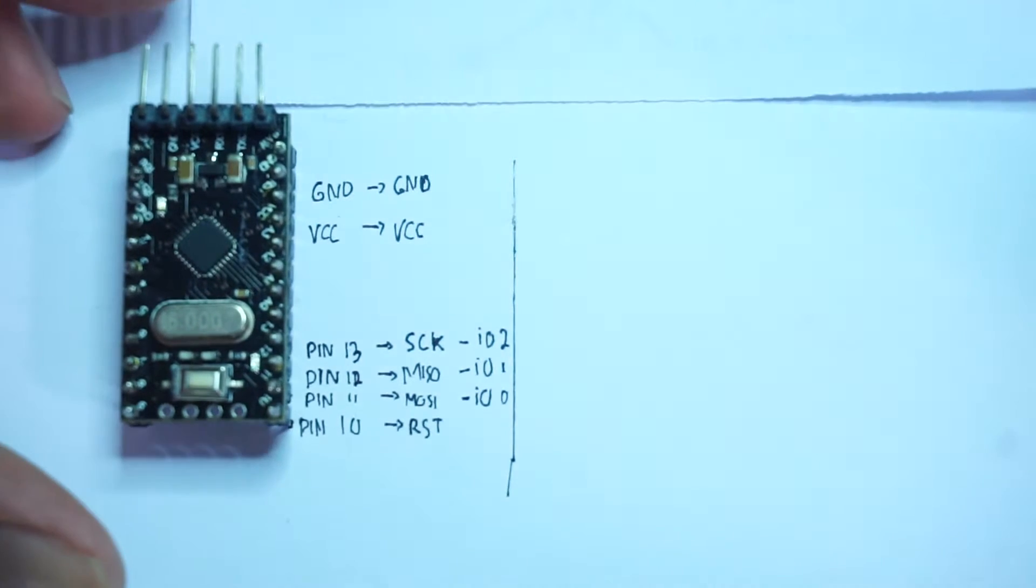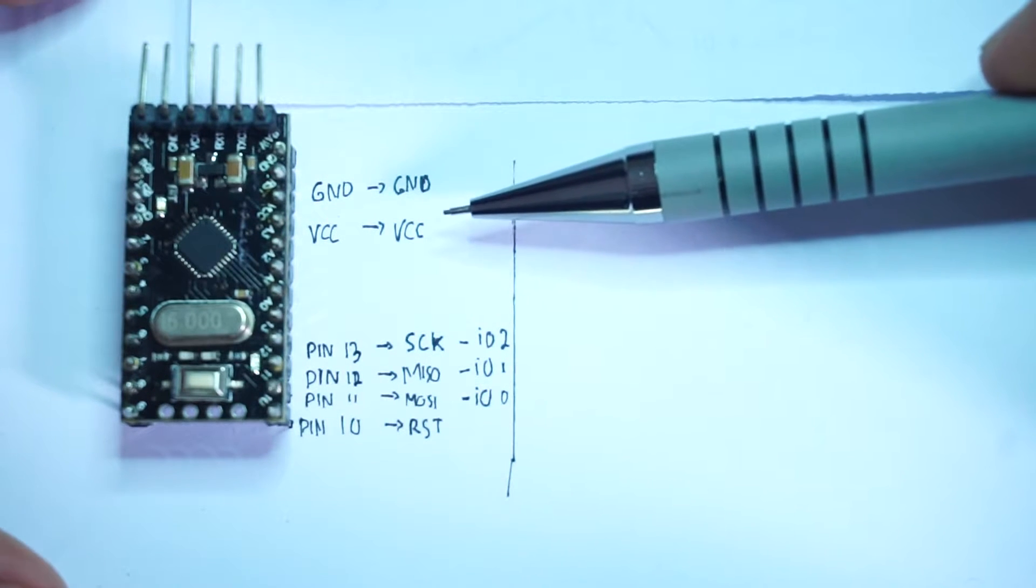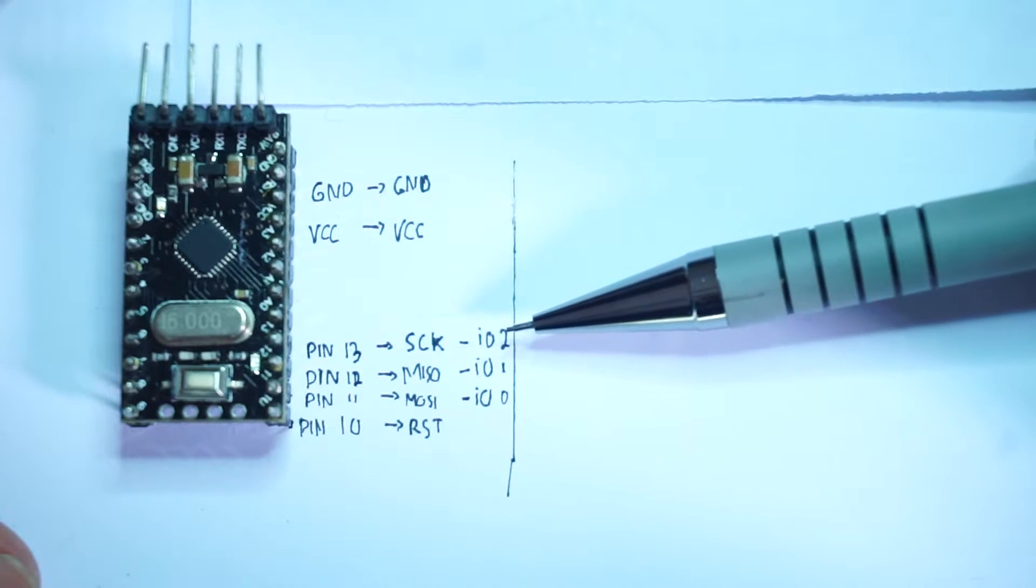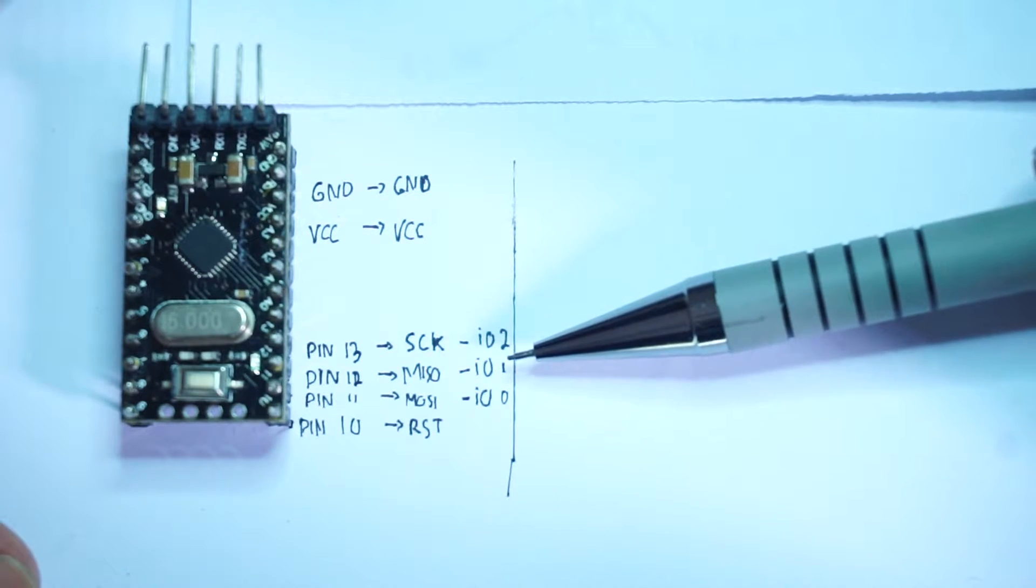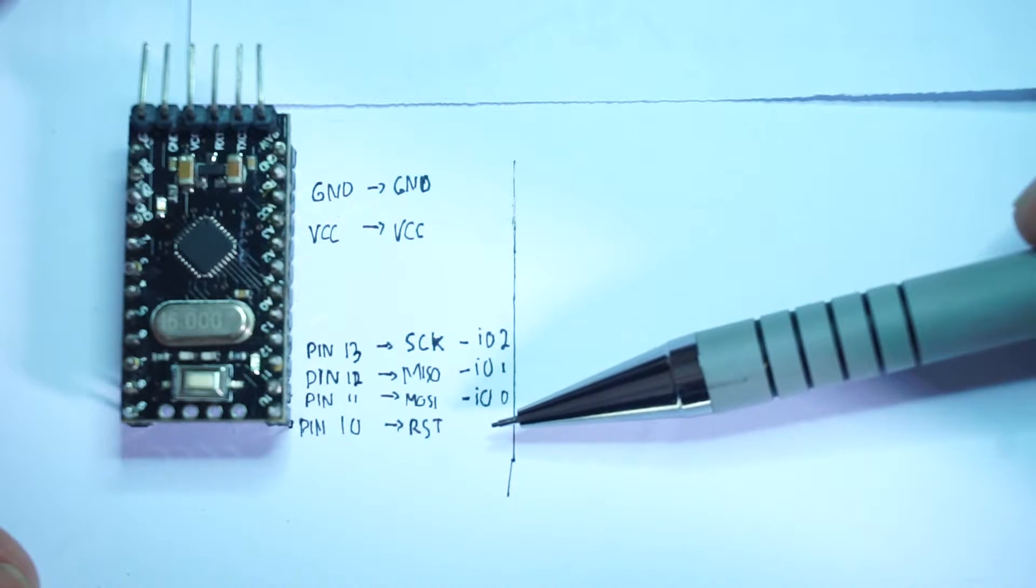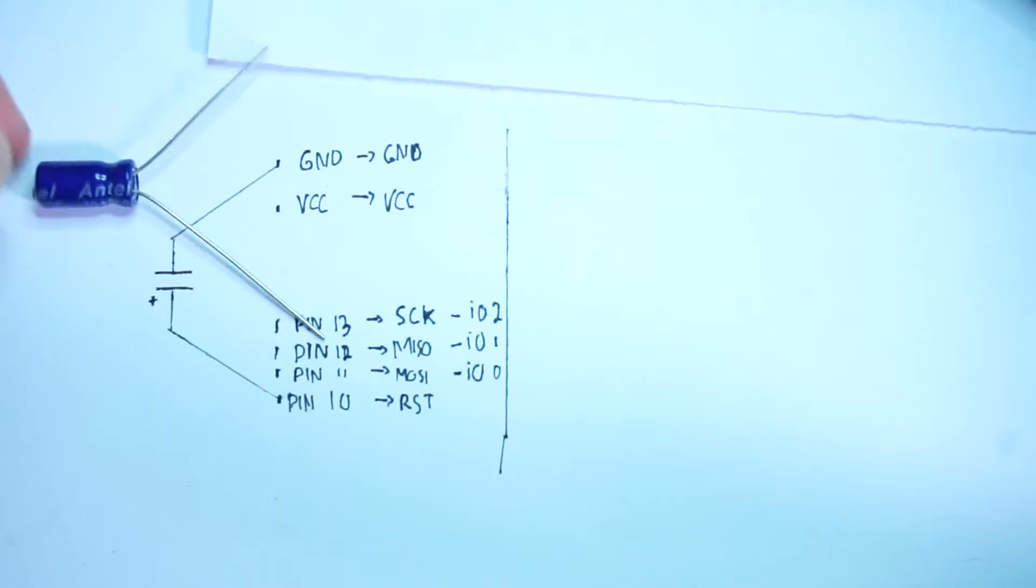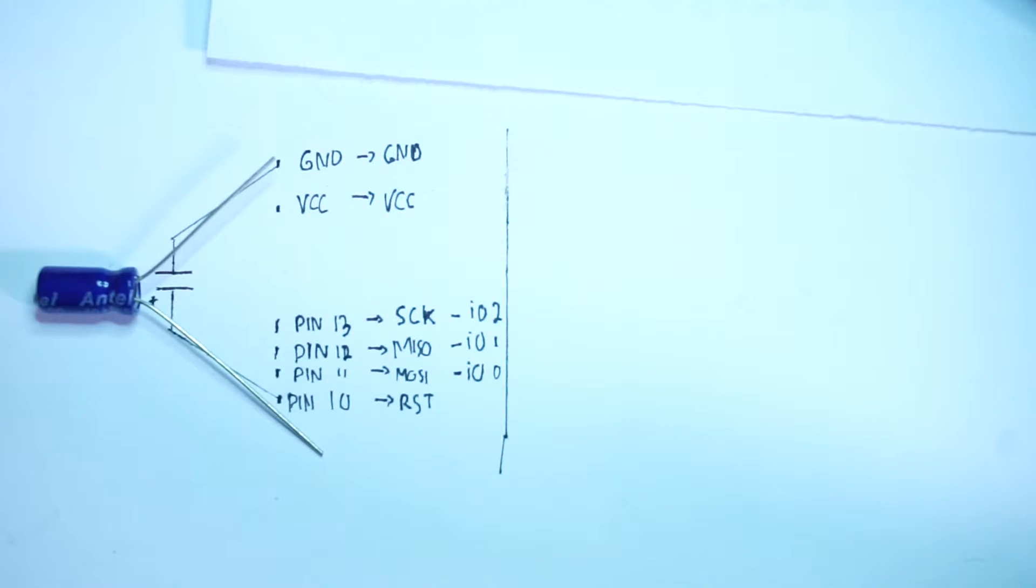For the wiring, ground Arduino to ground ATtiny, VCC of the Arduino to the VCC of the ATtiny, pin 13 to SCK or IO2, pin 12 to MISO or IO1, pin 11 to MOSI or IO0, pin 10 to the reset pin. And don't forget to put a 10uF capacitor between reset and ground.